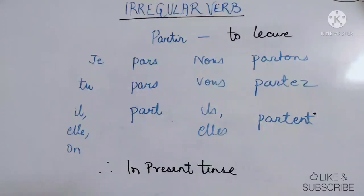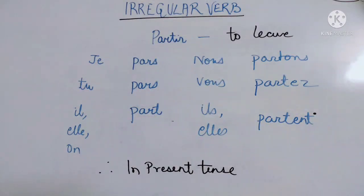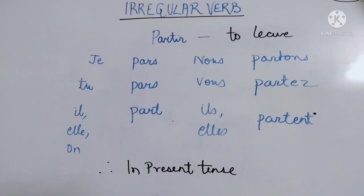'Je pars' means 'I leave'. 'Tu pars' — you leave. 'Il part' — he leaves. Spellings: 'je pars' is P-A-R-S, 'tu pars' is P-A-R-S, 'il part' is P-A-R-T. 'Nous partons' — P-A-R-T-O-N-S. 'Vous partez' — P-A-R-T-E-Z. 'Ils partent' — P-A-R-T-E-N-T.